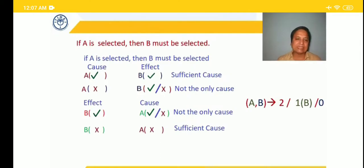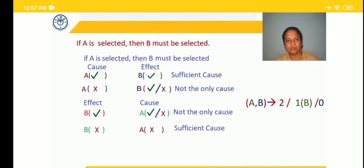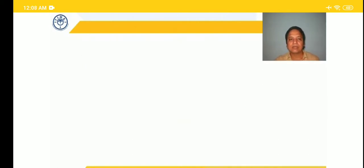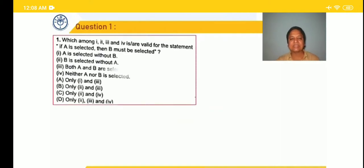Whenever a statement uses 'if', the cause is sufficient for the effect. So for this type of statement, when cause happens, effect will definitely happen. Now let's come to question number one of the handout. It says: which among the four statements are valid? If A is selected, then B must be selected. So if the cause happened — A is selected — then B will be there in the team.